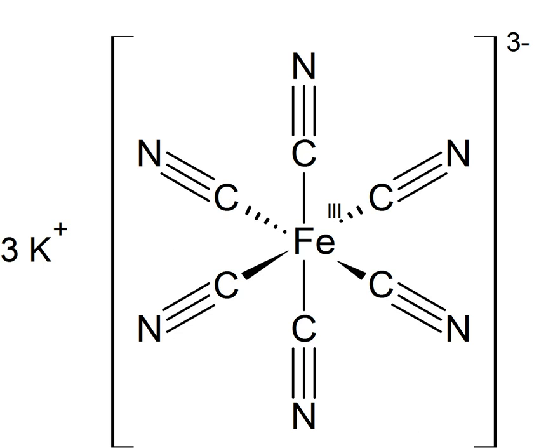In color lithography, potassium ferricyanide is used to reduce the size of color dots without reducing their number, as a kind of manual color correction called dot etching.